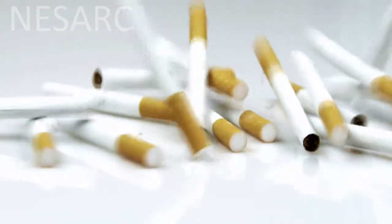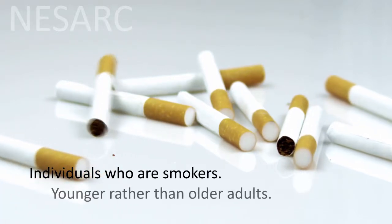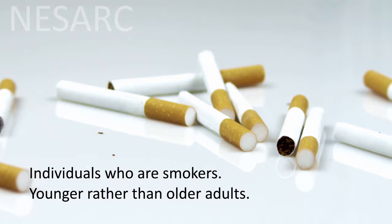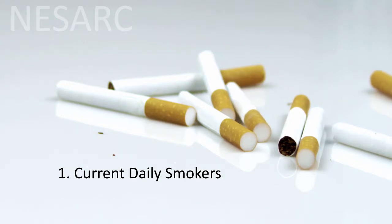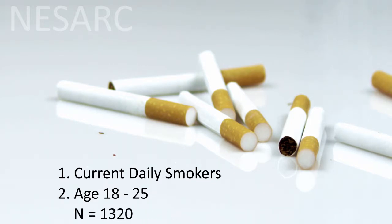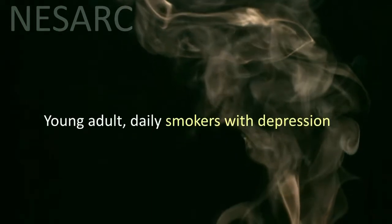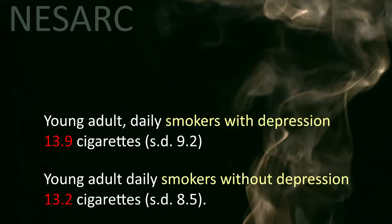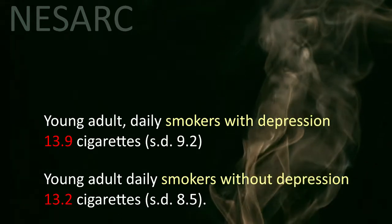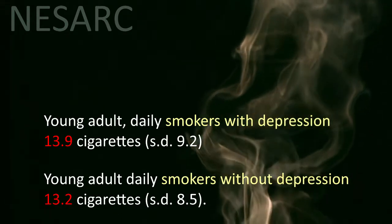After stating the null and alternate hypotheses, we need to choose a sample. We're going to use the NESARC dataset, and we're only going to evaluate these hypotheses among individuals who are smokers and who are younger adults. We subset the data to individuals who are, one, current daily smokers — that is, they've smoked every day in the month prior to the survey — and two, are aged 18 to 25. This sample, N equals 1,320, showed that young adult daily smokers with depression smoked an average of 13.9 cigarettes per day with a standard deviation of 9.2, while those without depression smoked an average of 13.2 cigarettes per day with a standard deviation of 8.5.